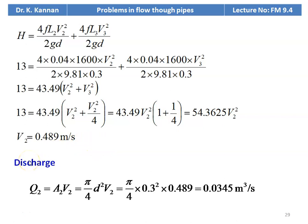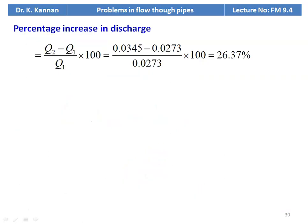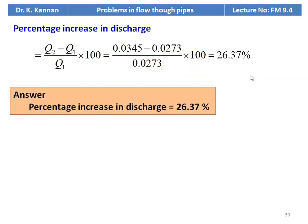The new discharge with the additional parallel pipe: Q2 = A2 × V2 = π/4 × 0.3² × 0.489 = 0.0345 meter cube per second. Percentage increase in discharge: (Q2 − Q1) / Q1 × 100 = (0.0435 − 0.0273) / 0.0273 × 100 = 26.37%. The answer: percentage increase in discharge equals 26.37%.